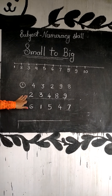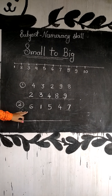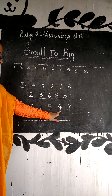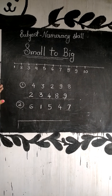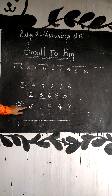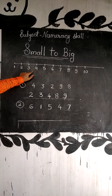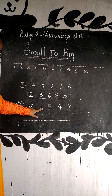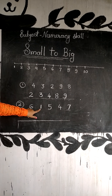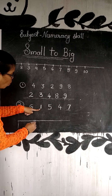This is how you arrange small to big numbers. Okay, now next example. See students: 6, 1, 5, 4 and 7. Now see, the smallest number of these numbers is — which number is smallest in this set?